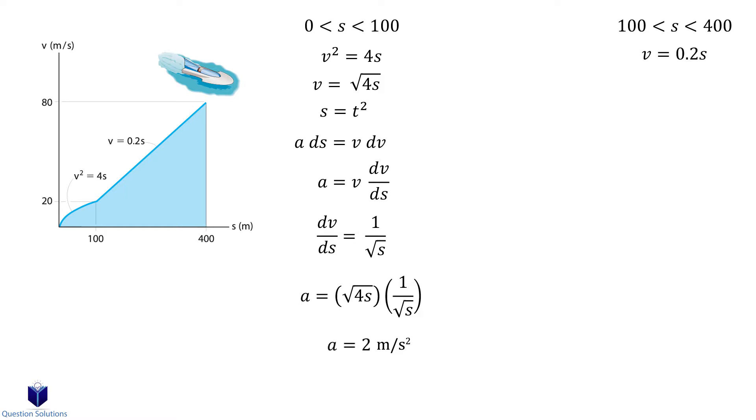We do the same exact thing for the next segment. So let's find the derivative of our second segment. dv over ds is 0.2. Let's write our equation which gives us 0.2s multiplied by 0.2. Solving gives us 0.04s. The graph looks like this.